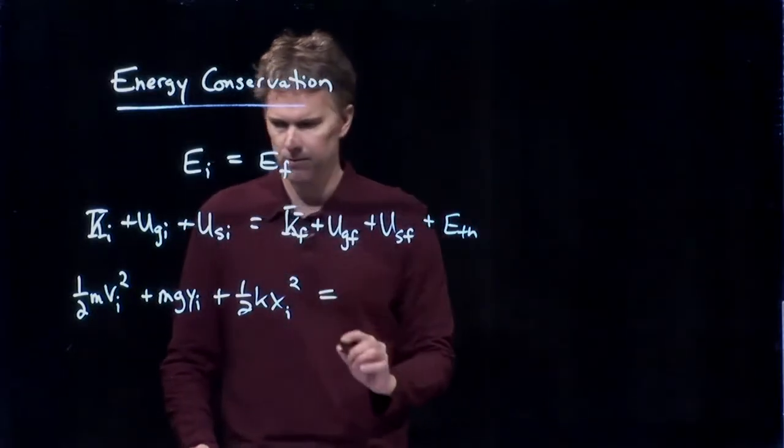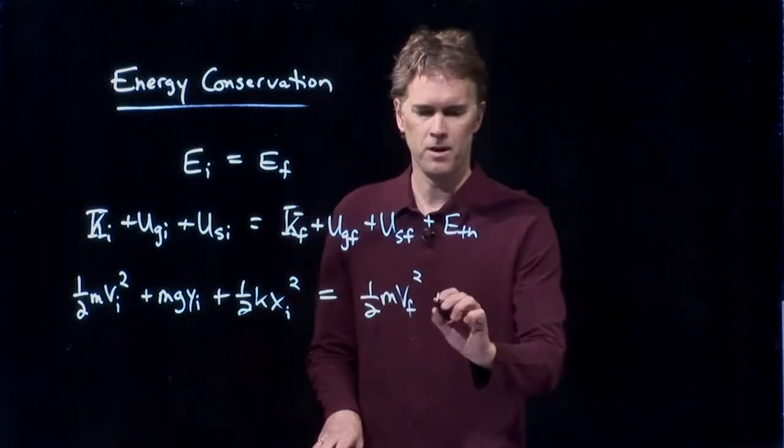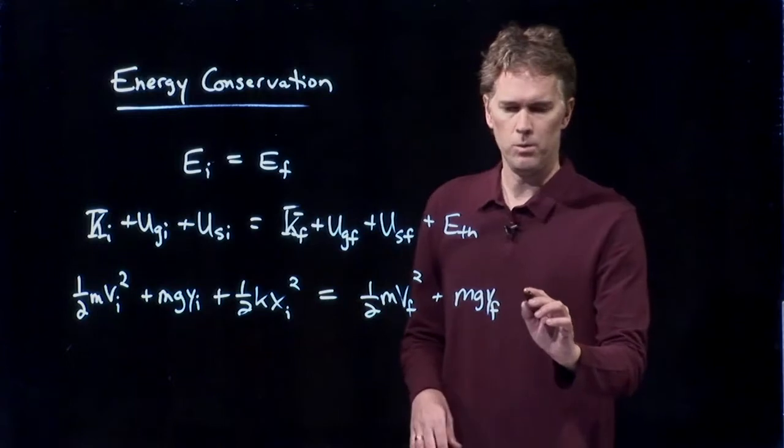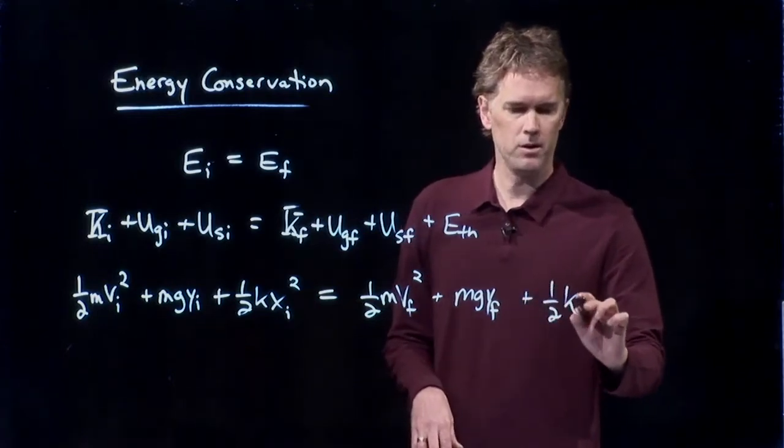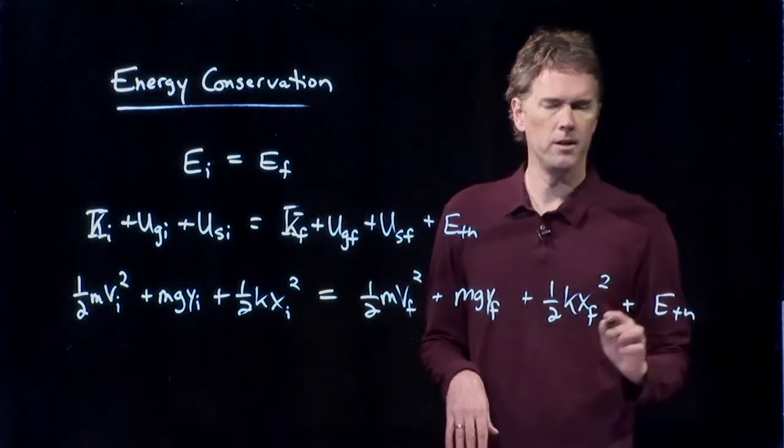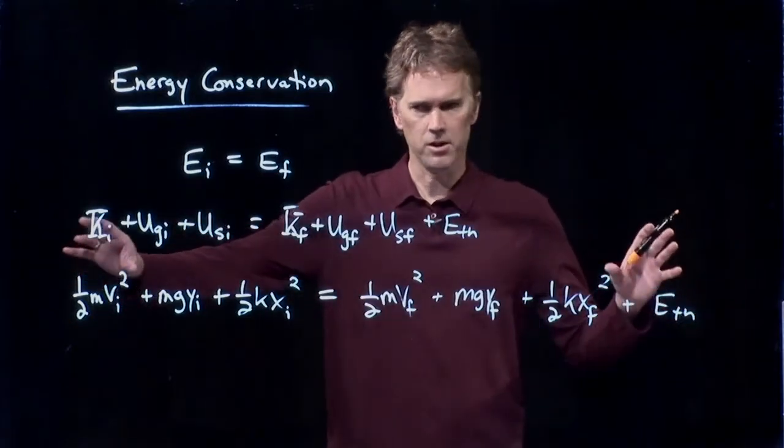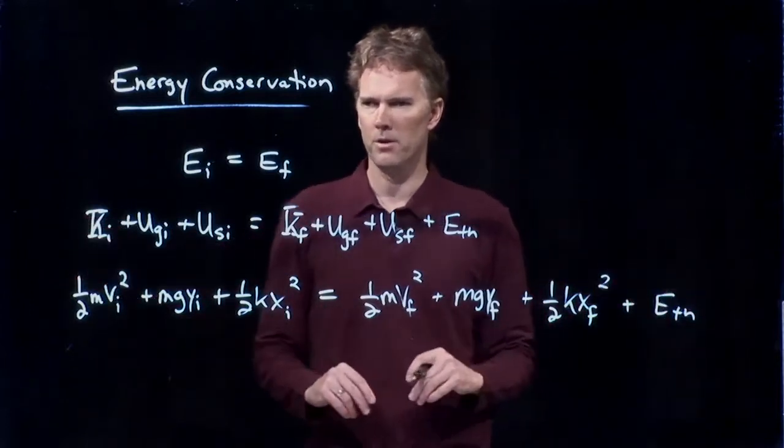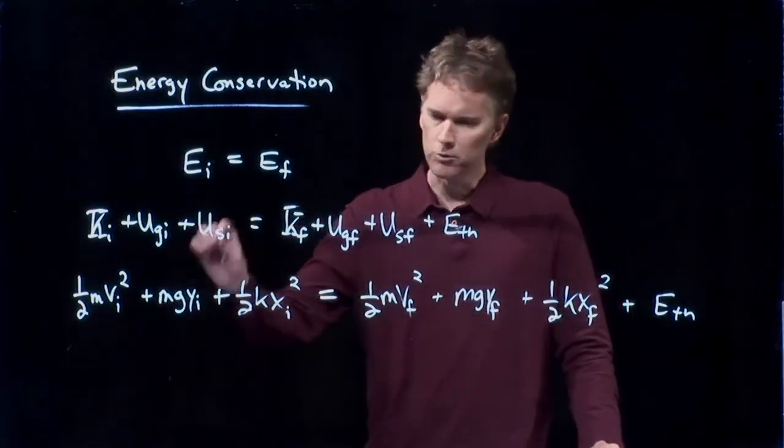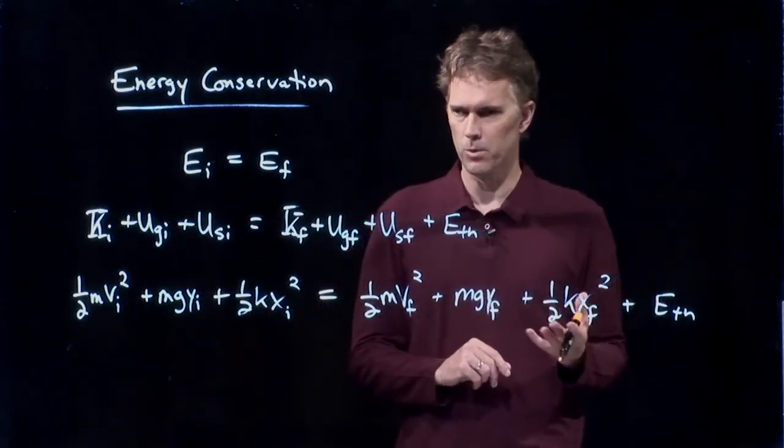So let's take a look at some of these terms in detail. We know what kinetic energy is: one-half mv squared. Gravitational potential energy is mgh or mgy. Spring potential energy is one-half kx squared, where x is the compression or stretch of the spring from its equilibrium position. If the spring is just sitting there at rest, then there's no potential energy. If you compress it a distance x, then you put potential energy into the spring.